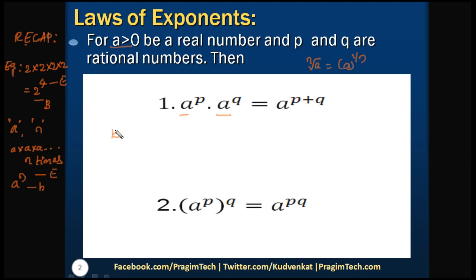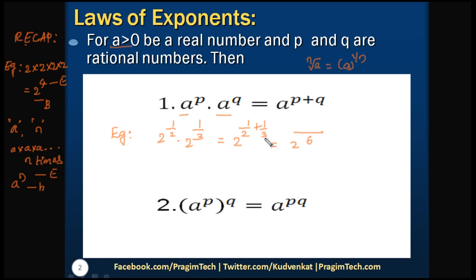Let's understand this with a simple example from NCERT: 2 to the power of 1/2 multiplied by 2 to the power of 1/3. According to this law, we write it as 2 to the power of (1/2 + 1/3). Taking LCM of 2 and 3 which is 6, this equals 2 to the power of 5/6, or equivalently 2 to the power of 5, whole to the power of 1/6.